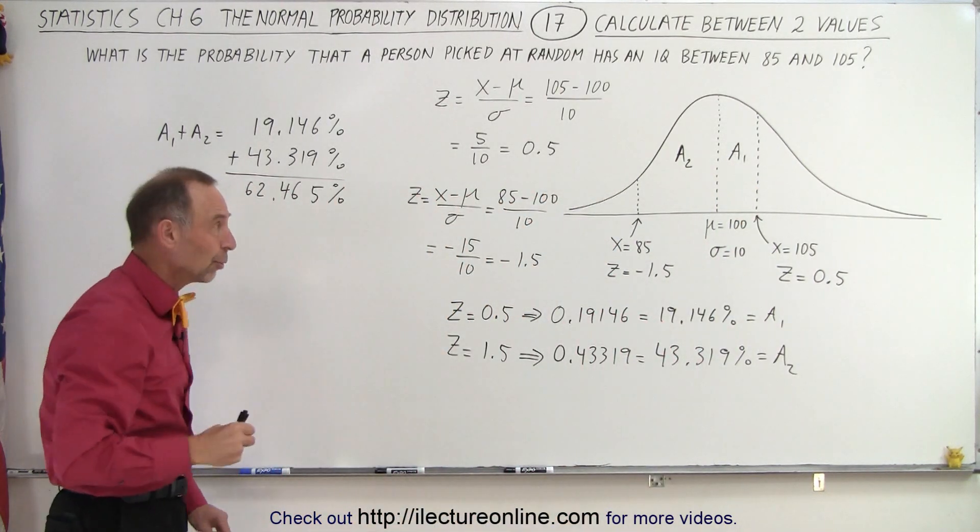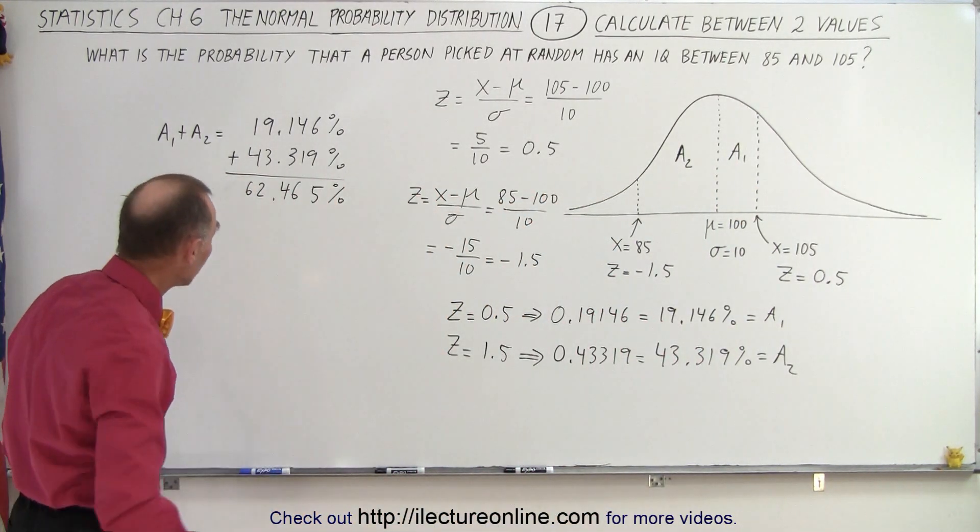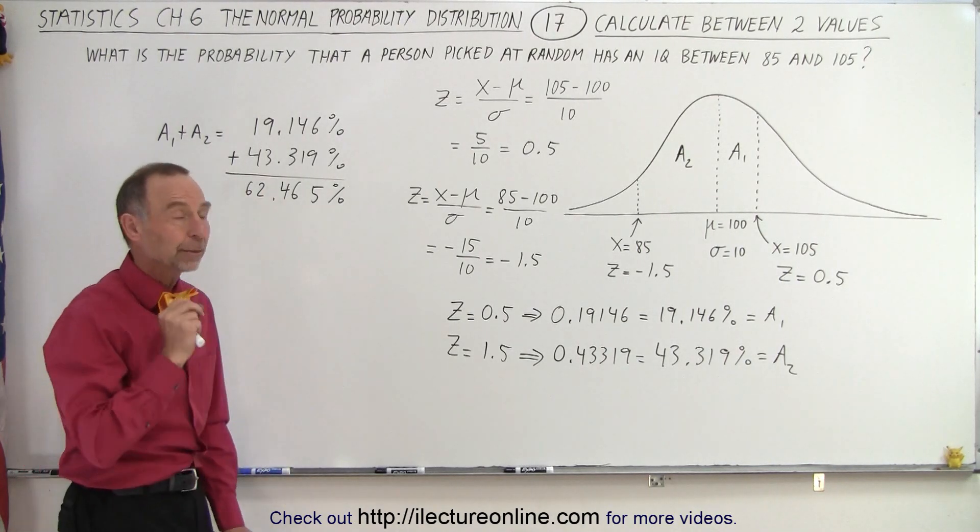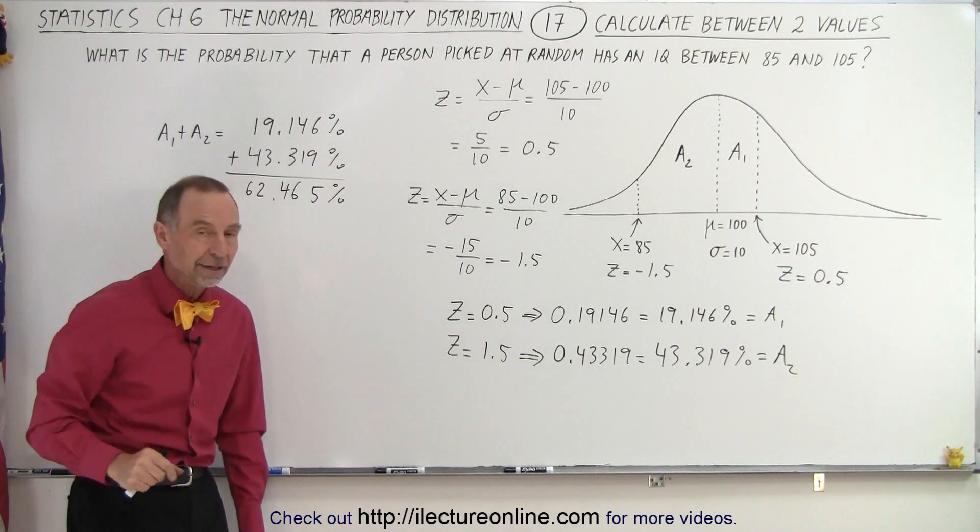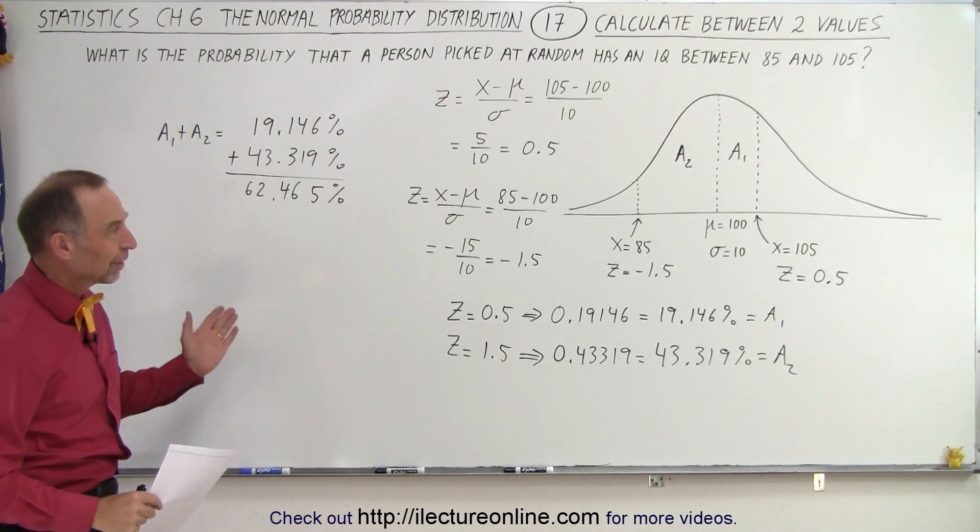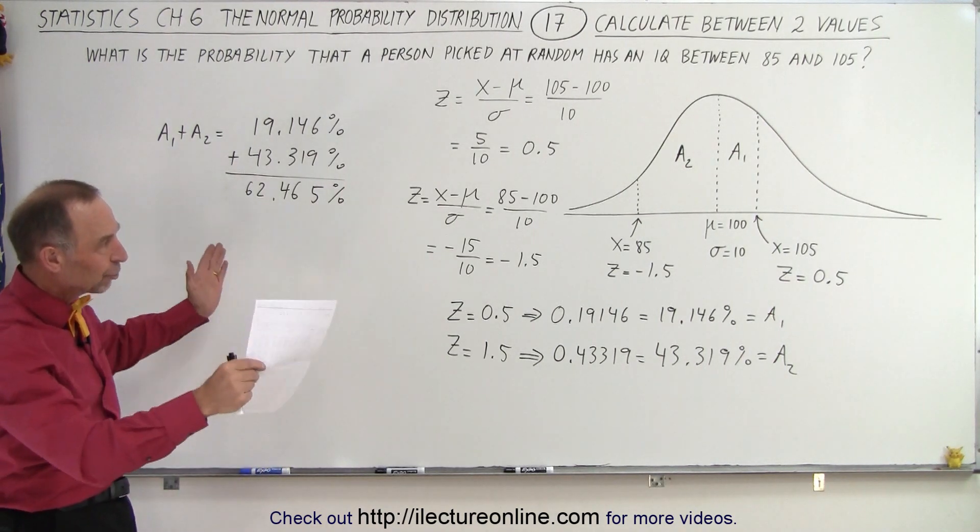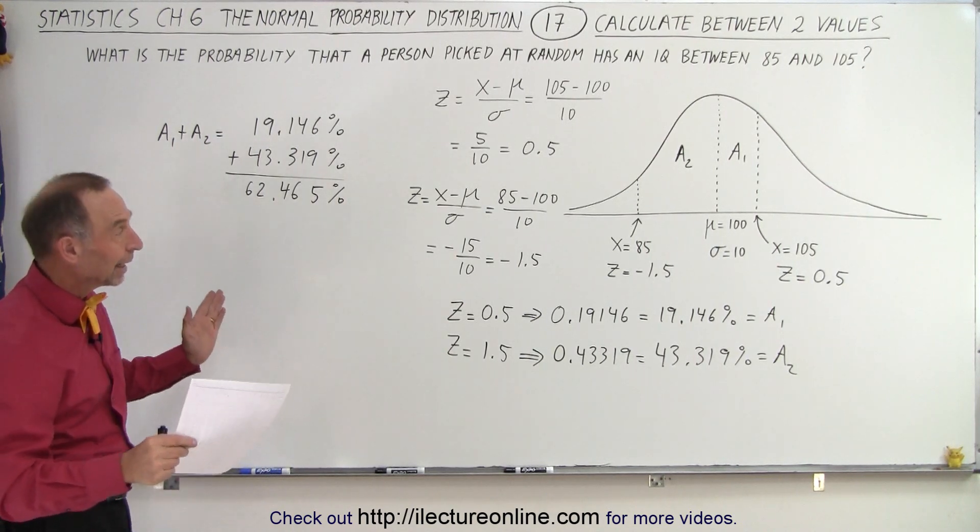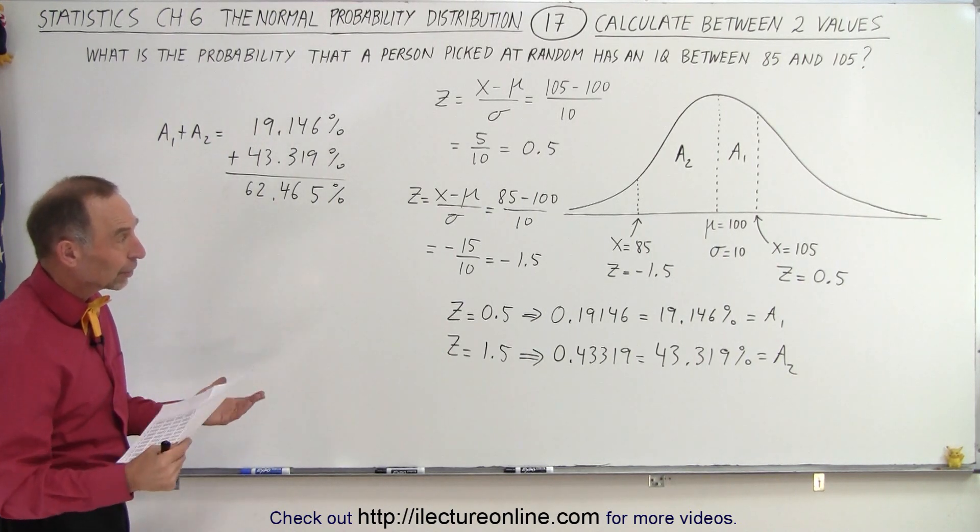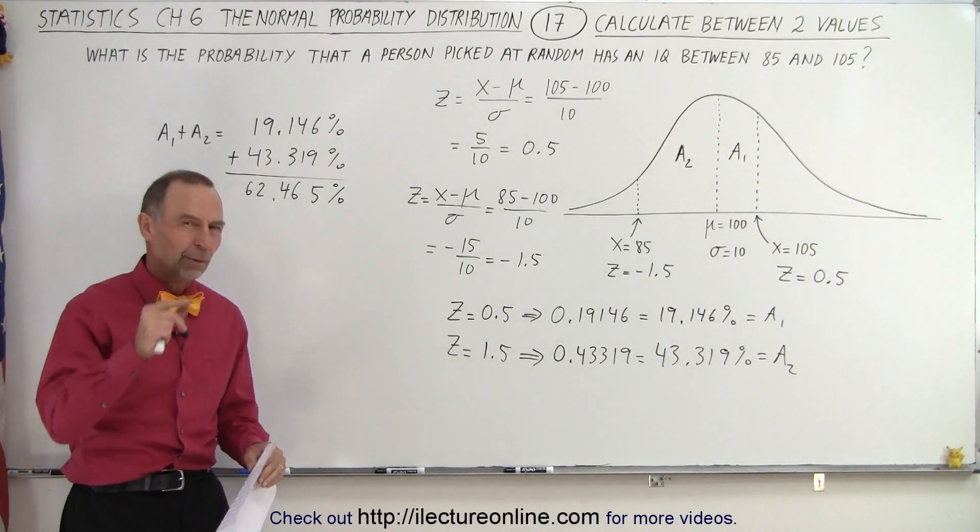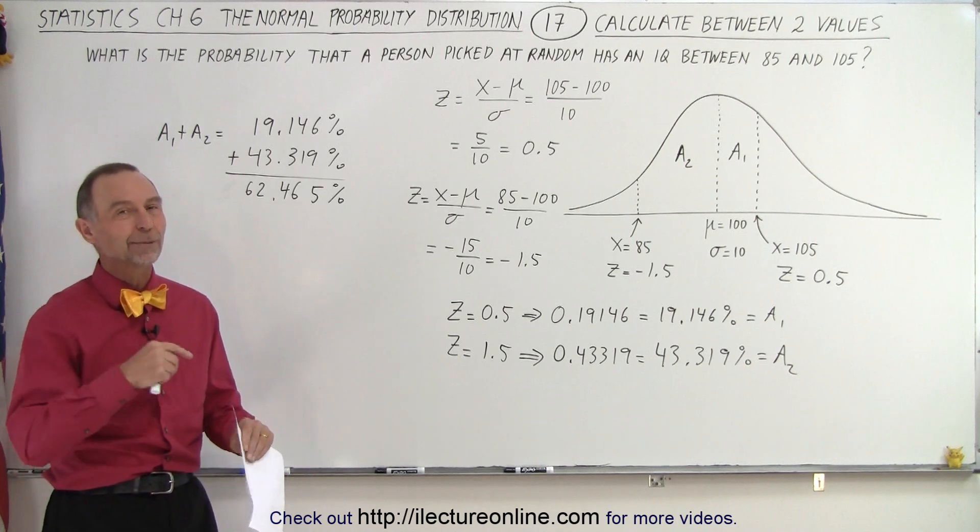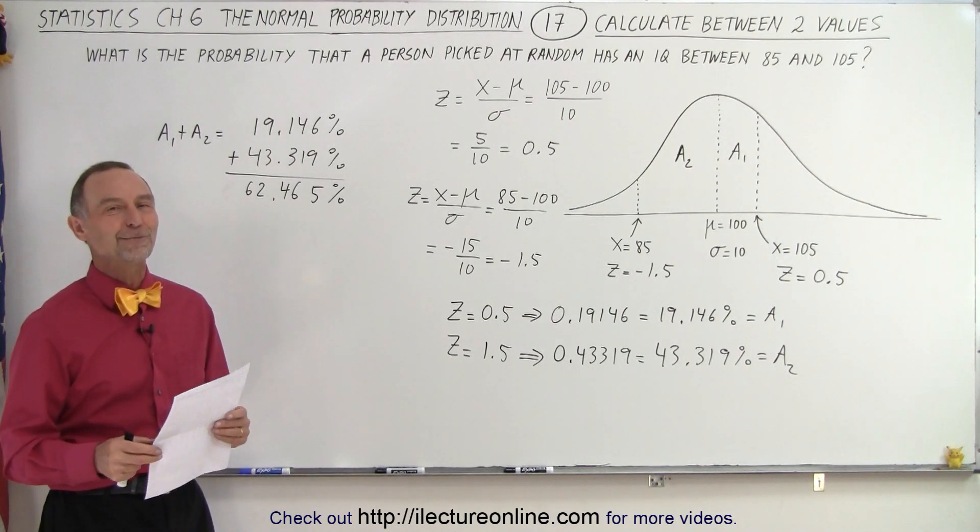So if you're going to pick a person at random out of a normal distribution, you expect there's about a 62% probability that you'll pick a person with an IQ between 85 and 105. And so that is how we do it when we have two different limits. We have to calculate each limit separately. In this case, we have to add them. In other cases, we may have to subtract them. We probably need to do an example in the case where I have to subtract one limit from the other. So let's do one of those on the next video.